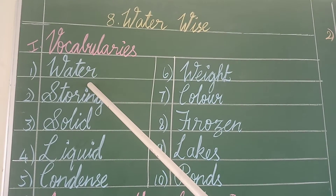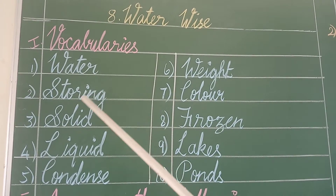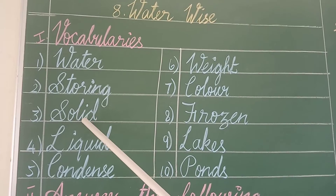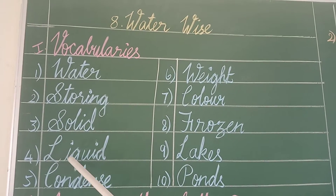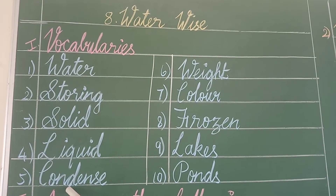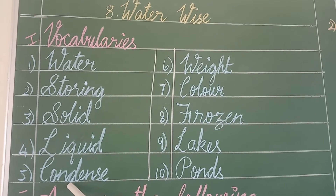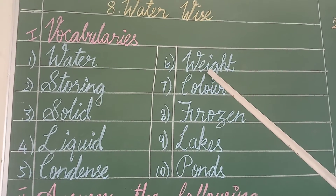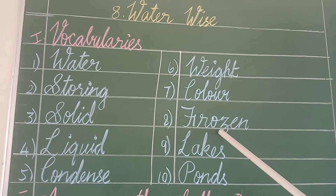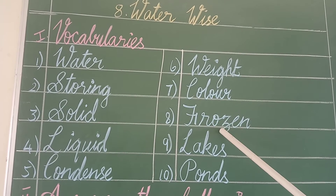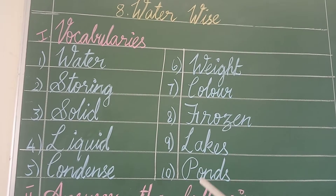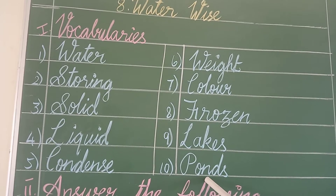Water - Thunni. Storing - Semithal. Solid - Thida Purul. Liquid - Thiravapurul. Condense - Thiravamokkudal. Weight - Yadai. Color - Neeram. Frozen - Uraindar. Lakes - Eirikal. Ponds - Kulangal.